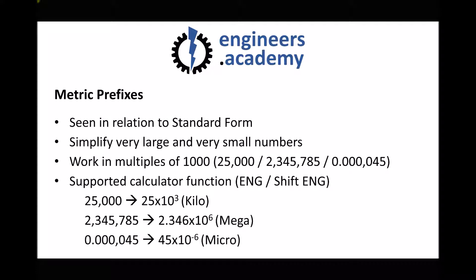If you type 25,000 into your calculator and press ENG, it will display 25 times 10 to the 3. Times 10 to the 3 is represented by the metric prefix kilo, so instead of 25 times 10 to the 3, we have 25 kilo. Next, 2,345,785 entered and ENG pressed returns 2.346 times 10 to the 6 — times 10 to the 6 is mega, so we have 2.346 mega. Finally, 0.000045 entered and ENG pressed returns 45 times 10 to the minus 6, which is 45 micro.